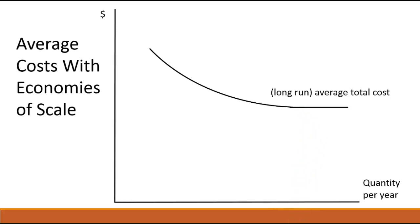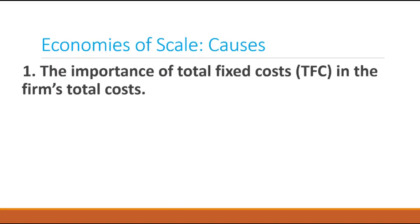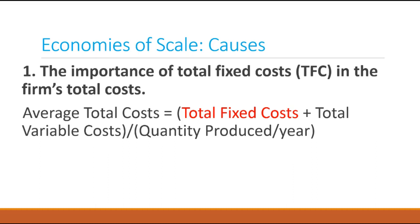Well, where do these economies of scale come from? Let's think of some explanations. One common explanation for economies of scale is to say that they occur when a firm has significant fixed costs as a part of its total costs. So, if we think of what average costs consist of, they consist of the average of the firm's fixed costs and the average of its variable costs. So, if those total fixed costs are very high, if they're a high proportion of the firm's total costs, then we would expect to see a significant effect on the average cost relationship.